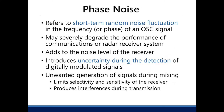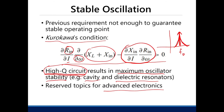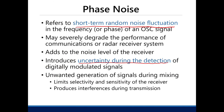Now let's look at phase noise. It refers to the short-term random fluctuation of noise in phase or frequency, and it introduces uncertainty during signal detection. Because of noise, your current can change a little, which could change R_in and X_in, compromising the stability of oscillation. Because of phase noise, you get unwanted signal generation during mixing — it limits selectivity, sensitivity, and produces interference.